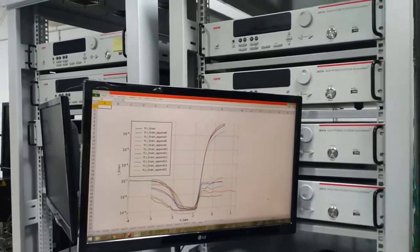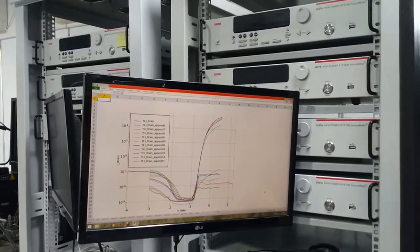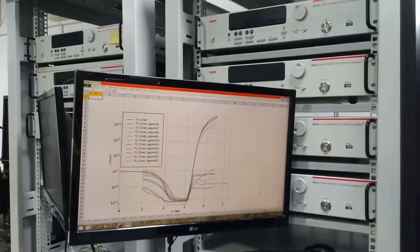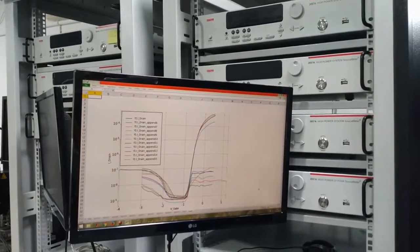For high power measurements, we have high voltage and high current measurement capabilities. In the high voltage measurement capability, we can go up to voltages as high as 3 kilo volts, and for high current capability we can measure currents up to 50 amperes.